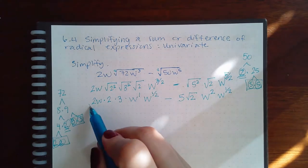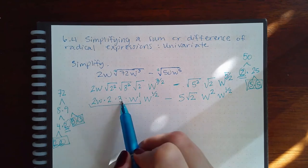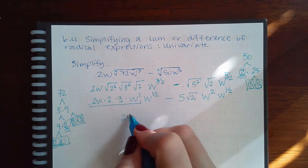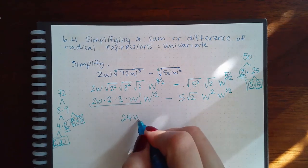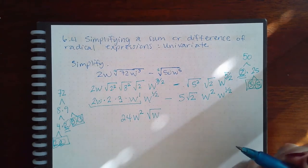Now we got to multiply all of this together. So 2 times 2 is 4, times 3 is 24. w times w is w squared. And this I'm going to put in its radical form, which is just the square root of w.